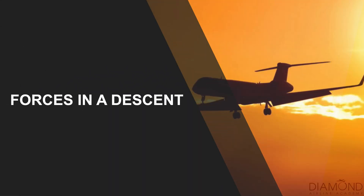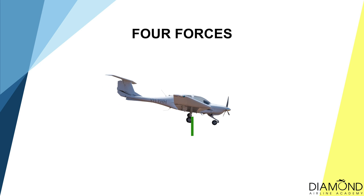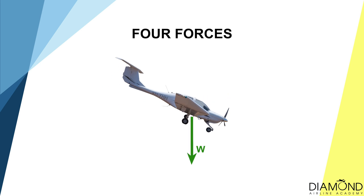In the last episode on Climbing, we talked about the different forces the airplane experiences during the climb. In this lesson on descending, we'll look at the same forces and the differences. When the aircraft is in descent, there will be the force of weight acting straight down to the ground from the centre of gravity. To counteract that, we have the lift force produced from the wing. However, because the aircraft is in descent, the attitude will be slightly pitched down, and so does the lift force. The lift line is shorter than the weight line, therefore lift is less than weight.